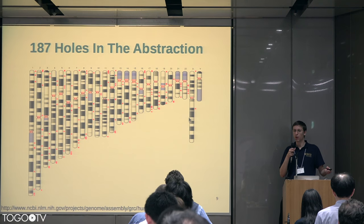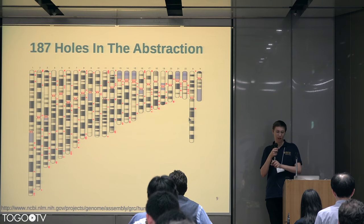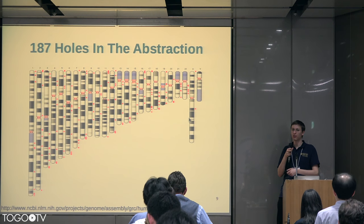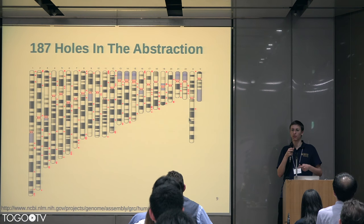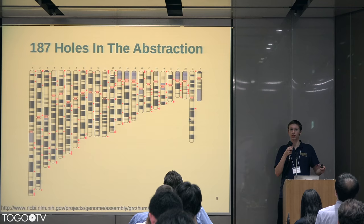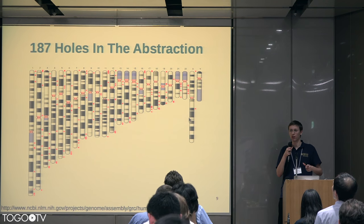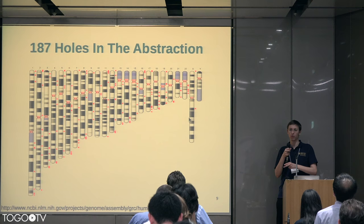Even though most of a genome is mostly the same between people, we've found there are now 187 different places in the genome that are like the MHC, where in the GRCh38 assembly build they're distributing these alt-loci sequences that give alternative versions of that region. It's really hard to incorporate that information into analyses when we're doing the analysis in this linear paradigm.